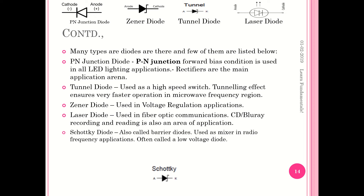Wherever high speed switches are required we can go with tunnel diode. Laser diode, as the name specifies, is very helpful in fiber optic communication. Schottky diode is there and they are also called barrier diodes. It is used as a mixer in radio frequency applications and is also referred to as a low voltage diode. So we have five diodes: p-n junction traditional, zener diode for voltage regulation, tunnel diode as high speed switch, laser diode for fiber optic and CD and Blu-ray recording and reading, and Schottky diode — also called barrier diodes and low voltage diodes.